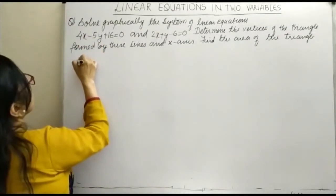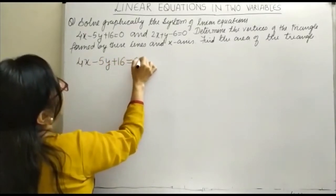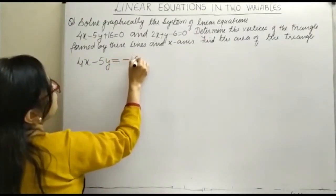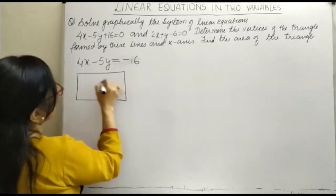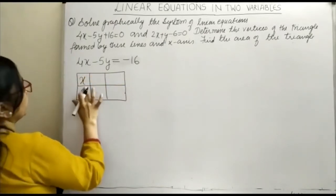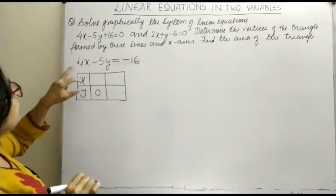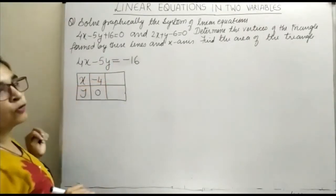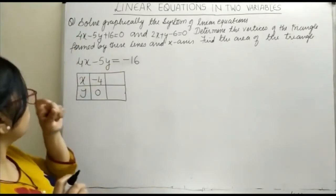Our first equation is 4x minus 5y plus 16 equals 0. Let me take this plus 16 as equals minus 16. Now we have to find out the values. Any two values are required for plotting the graph. This is x and this is y. If you take y as 0, you get x equals minus 16 divided by 4, which is minus 4. Now if I take x as 0, we won't get an integral value.